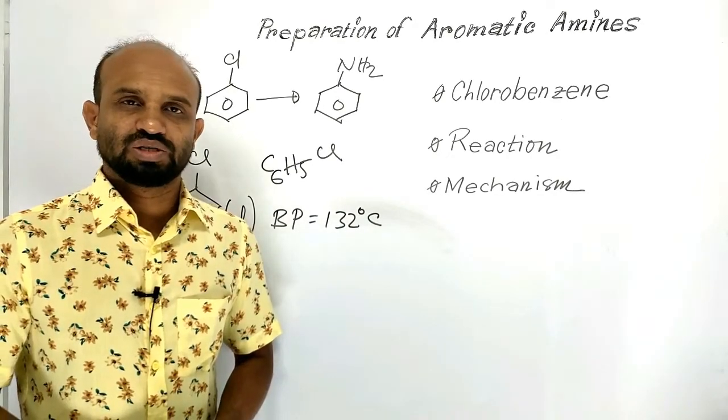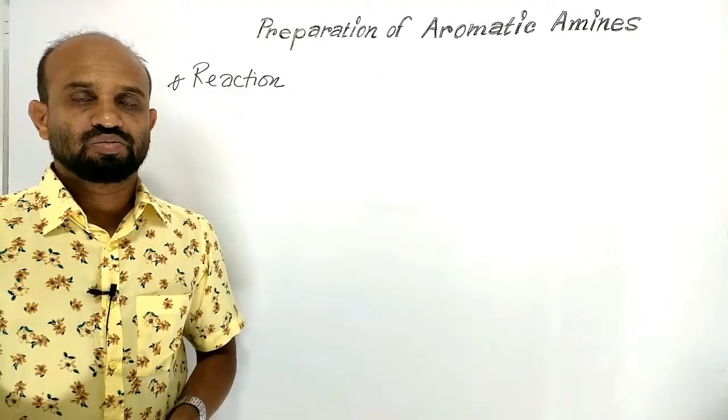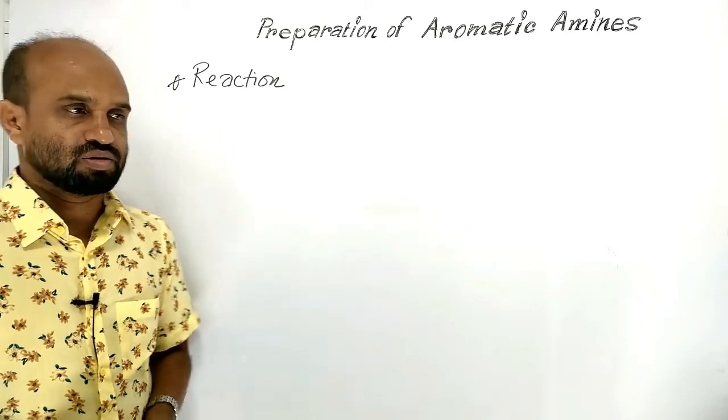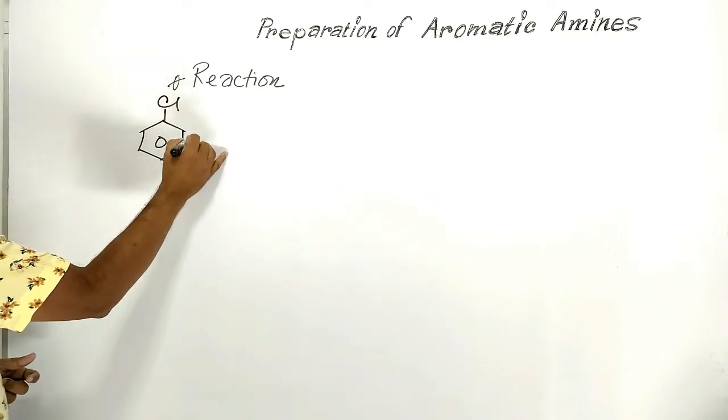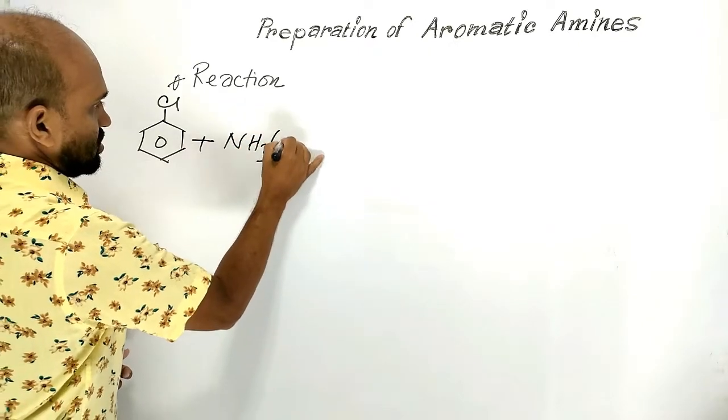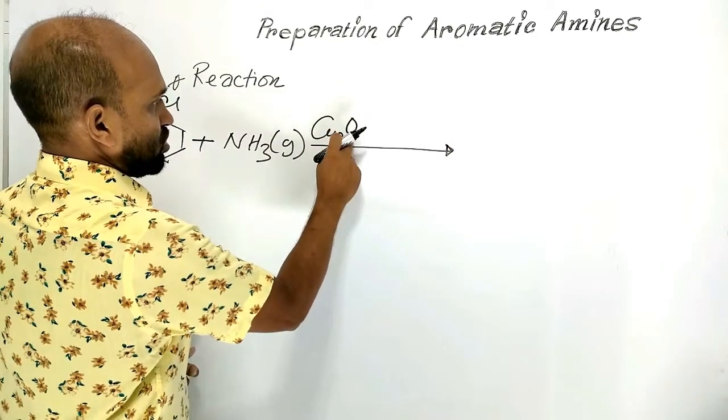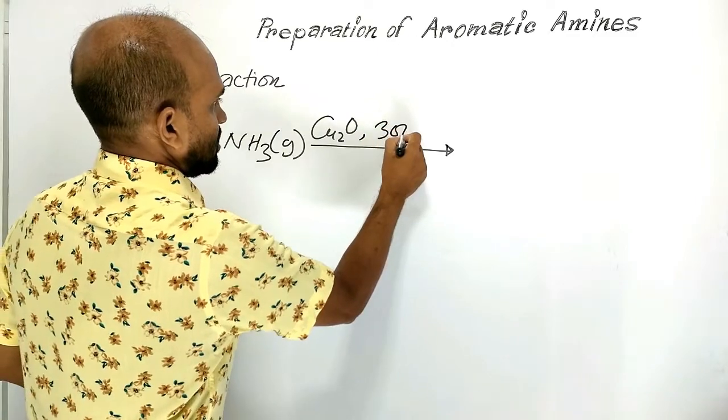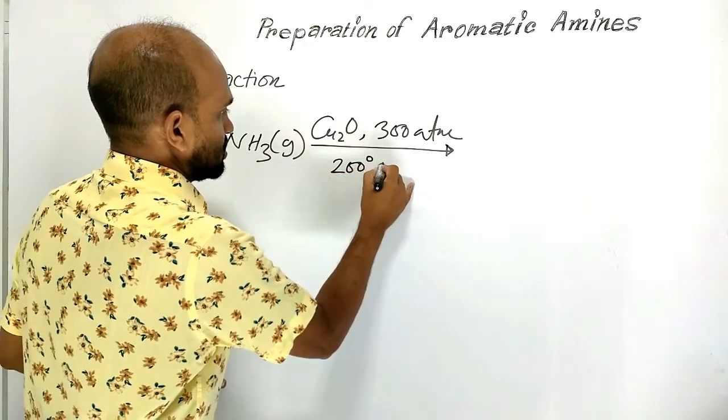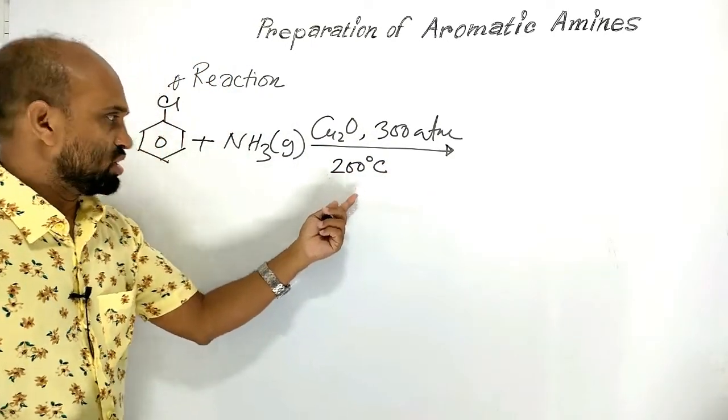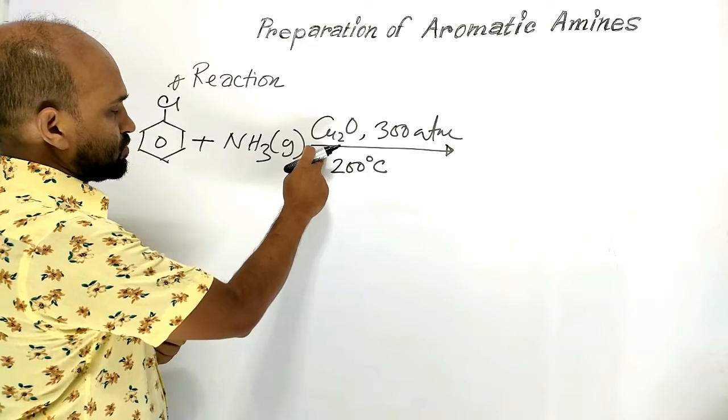Now let's see the reaction of chlorobenzene to produce aniline. Let's write the reaction. Chlorobenzene plus ammonia gas with copper oxide catalyst at 300 atmosphere pressure and 200 degrees Celsius temperature.